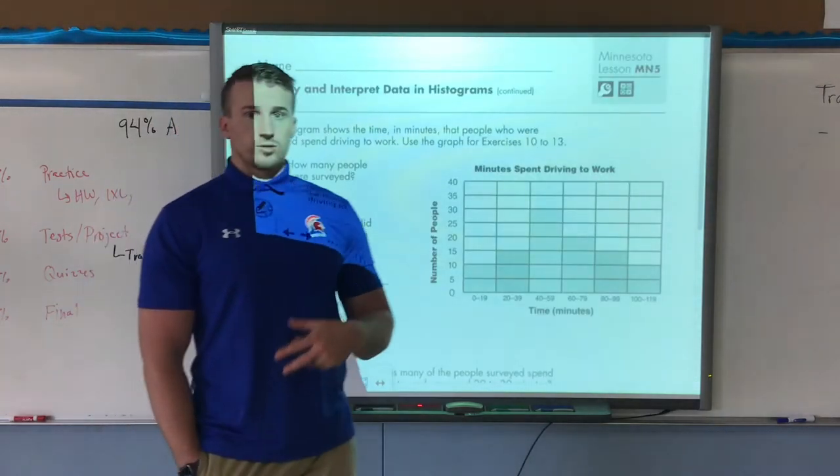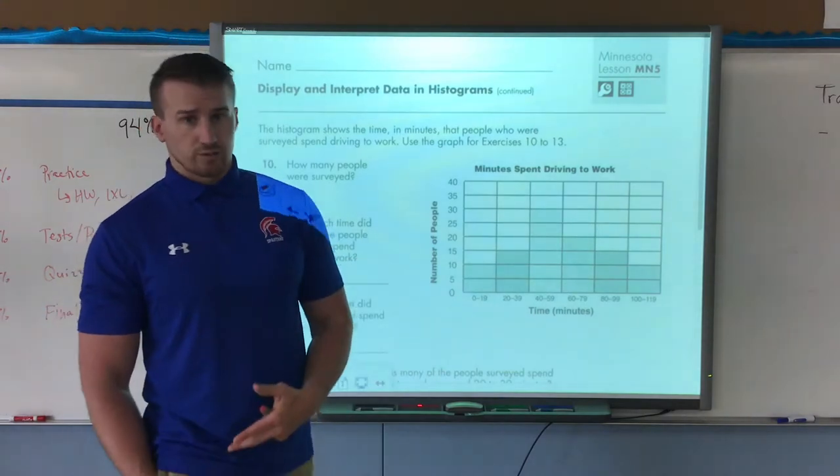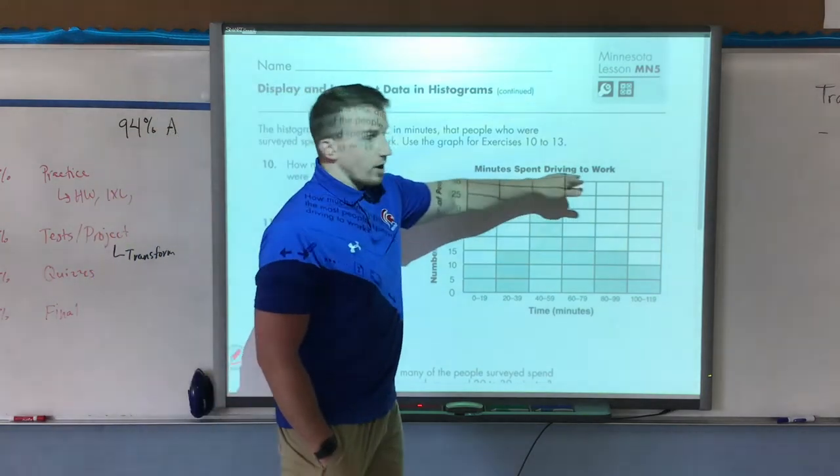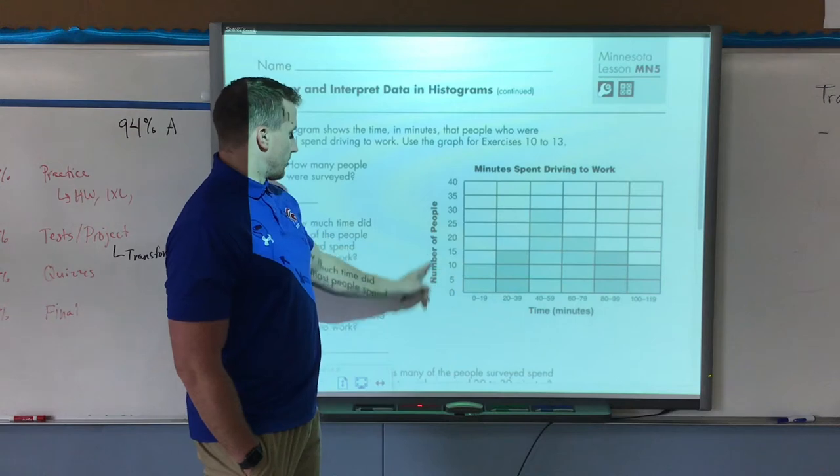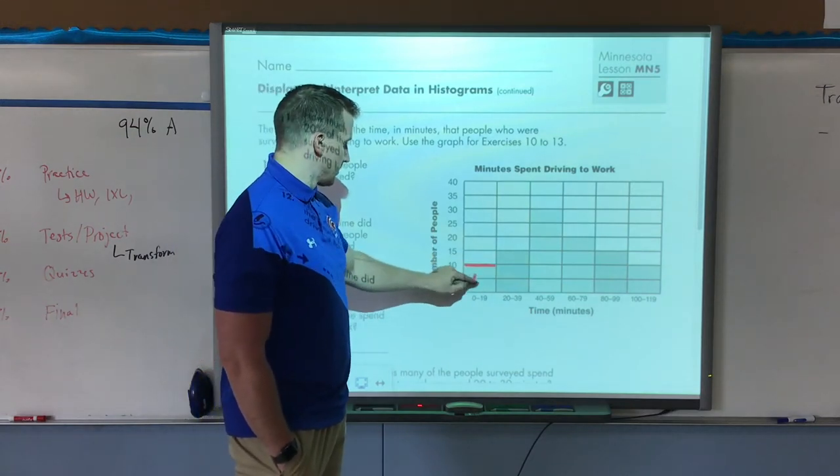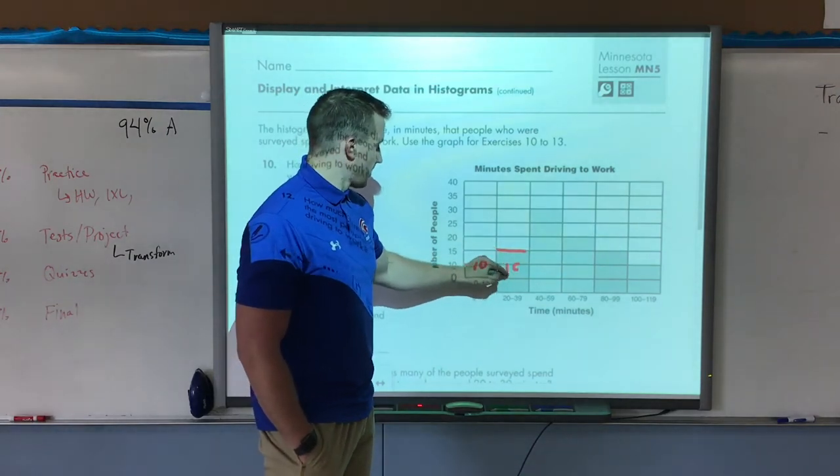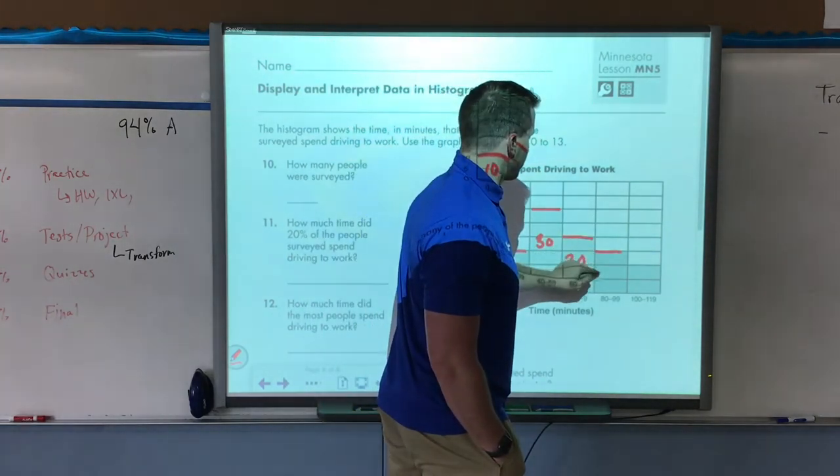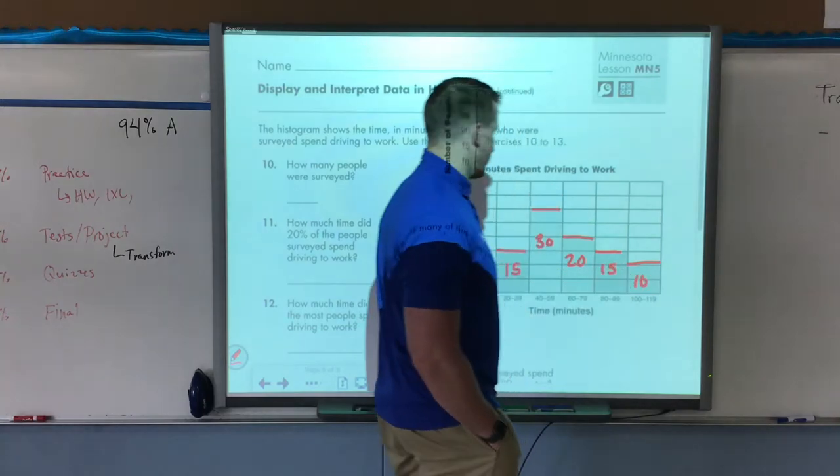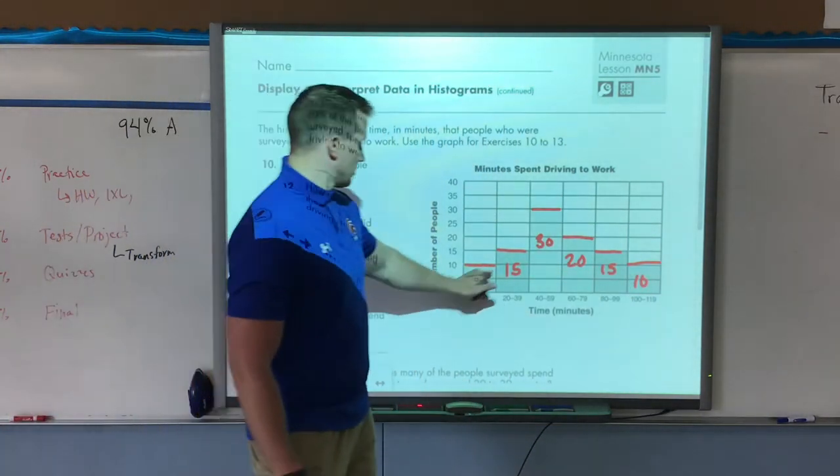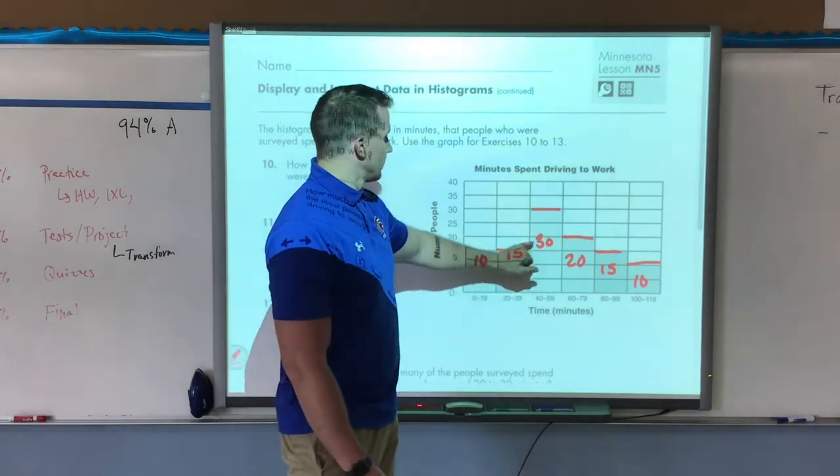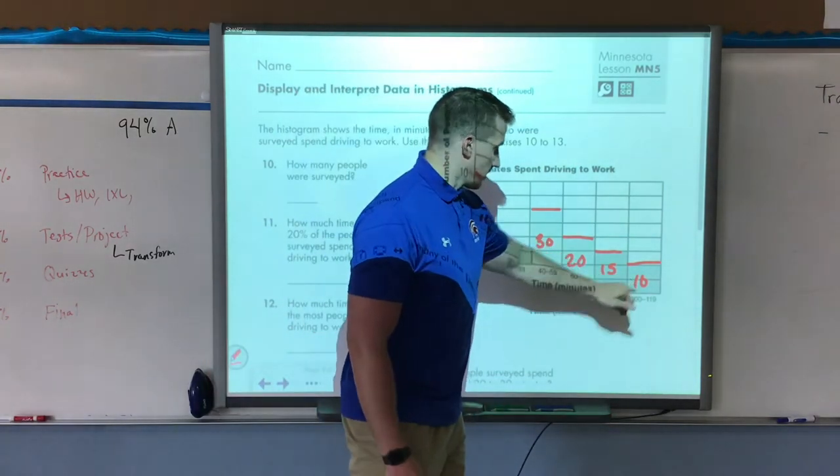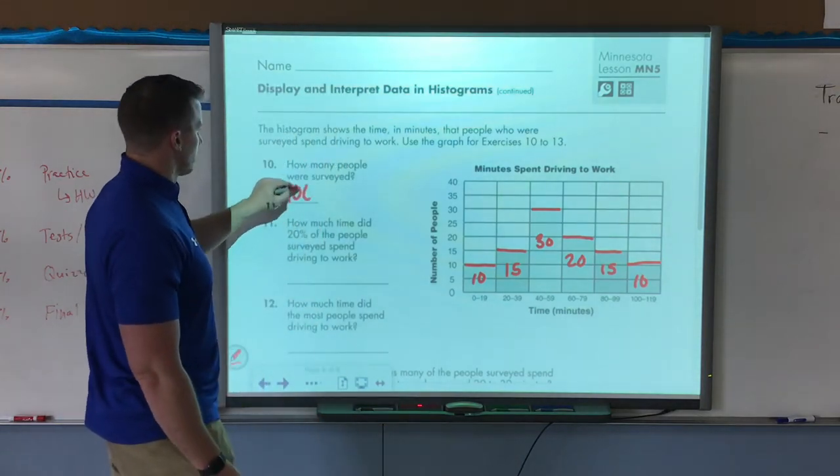Now we're able to analyze a histogram already created and answer questions from it. How many people were surveyed? The survey was minutes spent driving to work. The number of people tells us how many were surveyed. This one goes to 10, then this one is 15, here is 30, here's 20, 15 again, and then 10. So how many people were surveyed? 100.